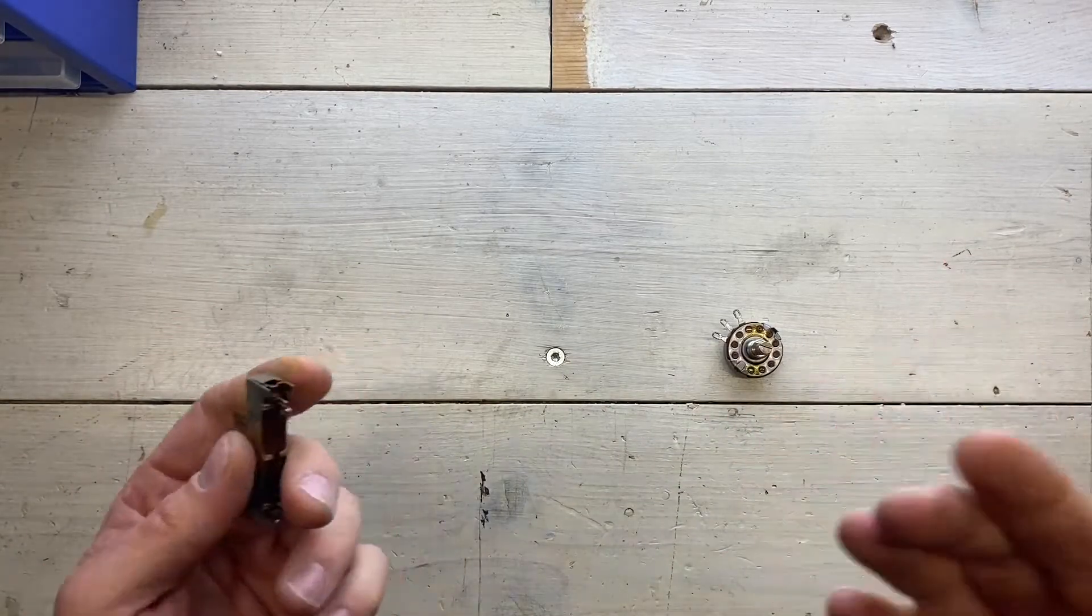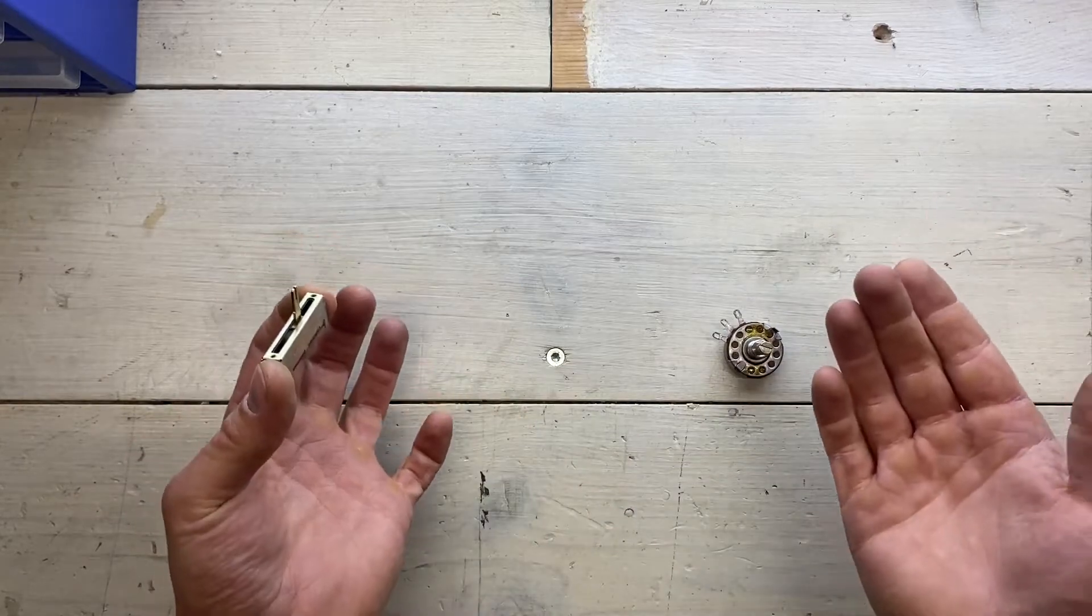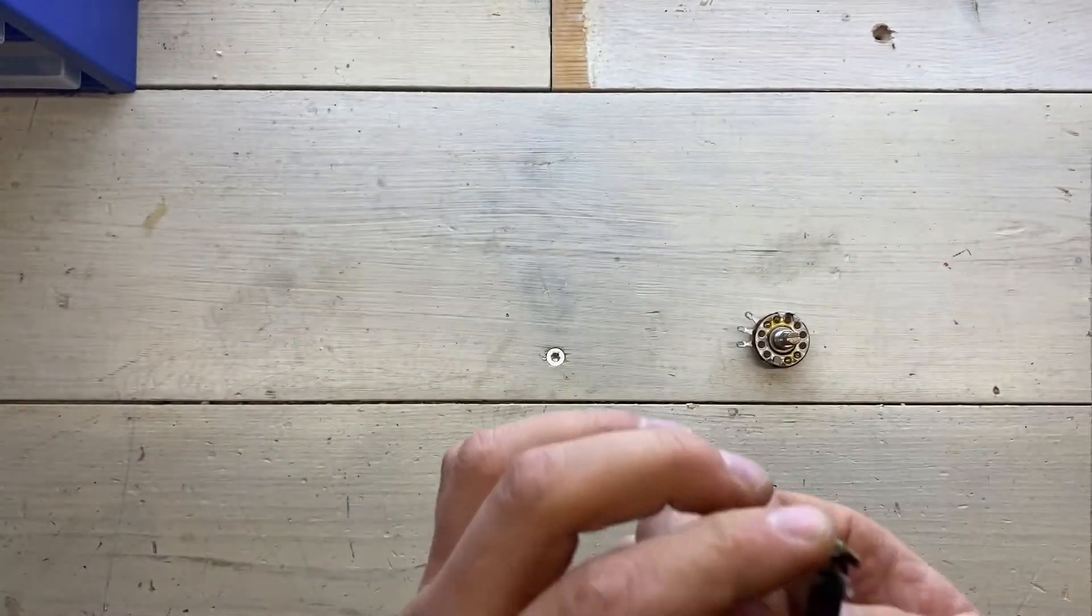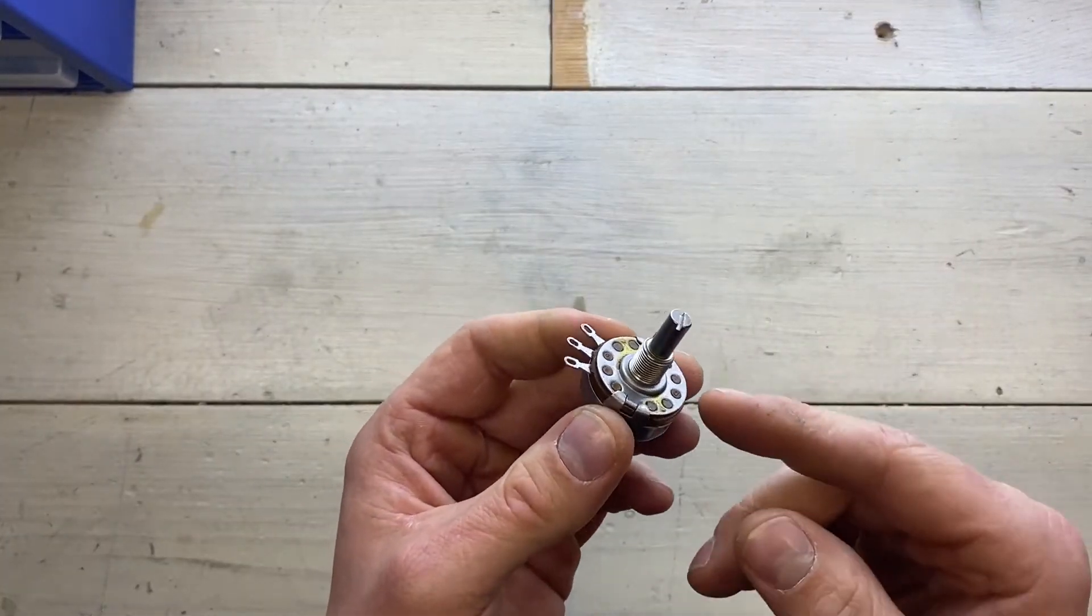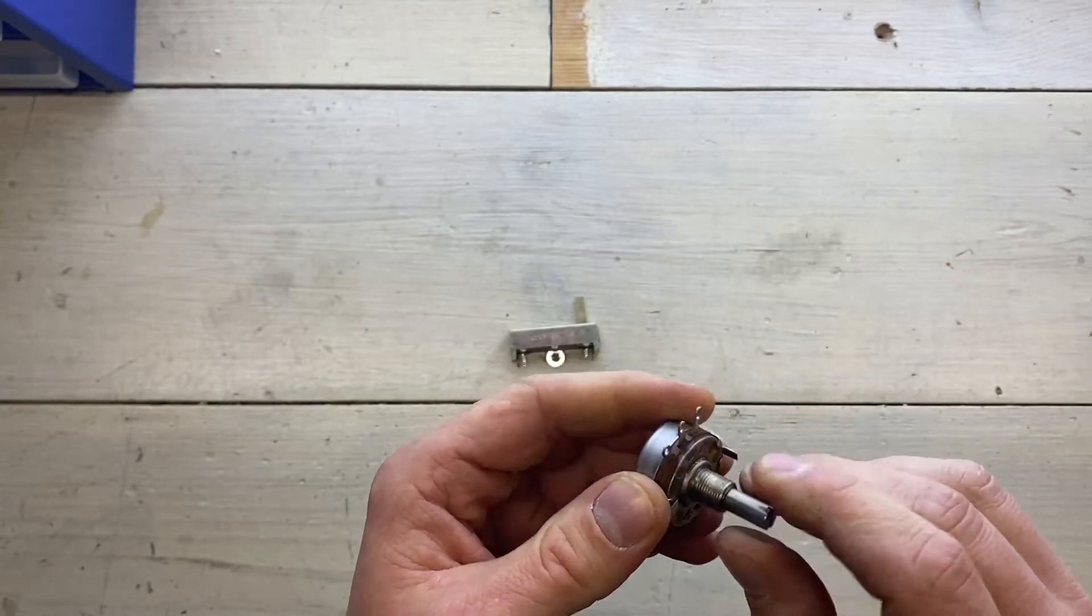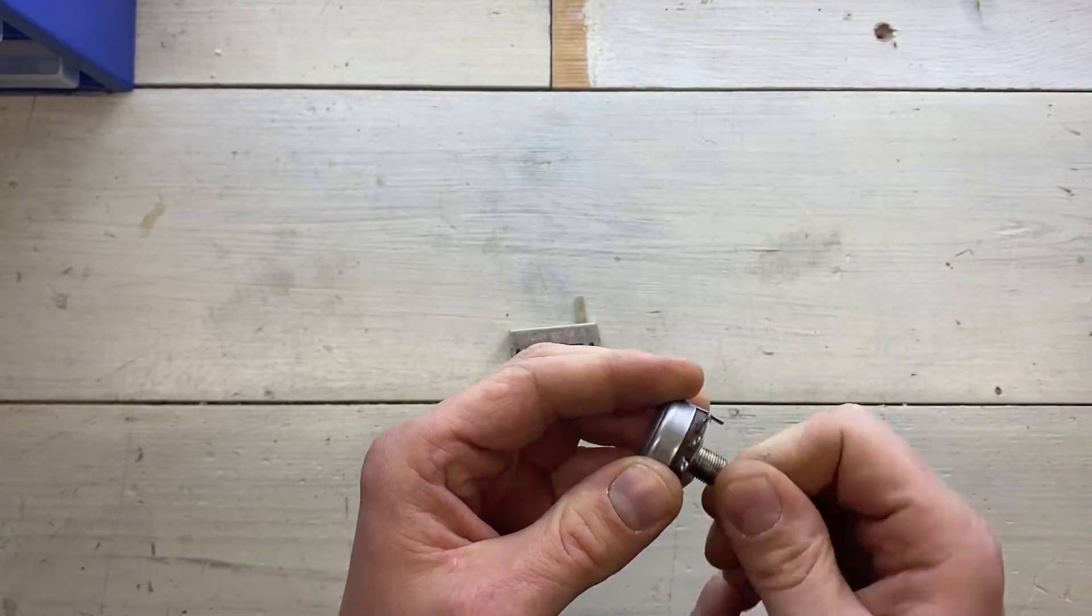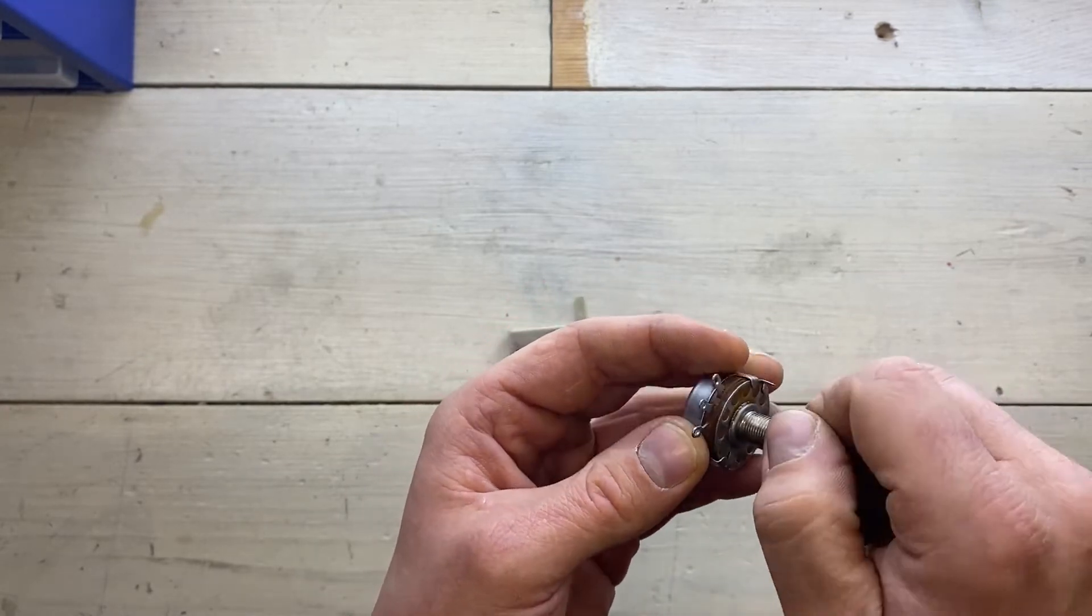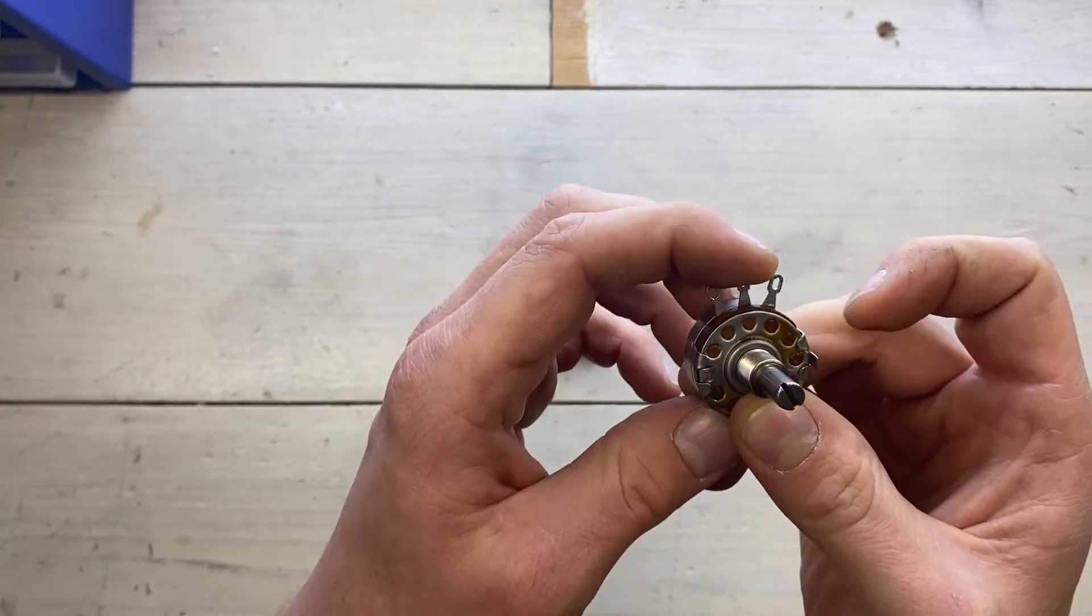But not too long ago every single TV or hi-fi system or anywhere where you needed to set or adjust something you had a potentiometer. And a potentiometer varies resistance. So inside here we have either a metal resistor or a carbon trace. And the central shaft is connected to a wiper.